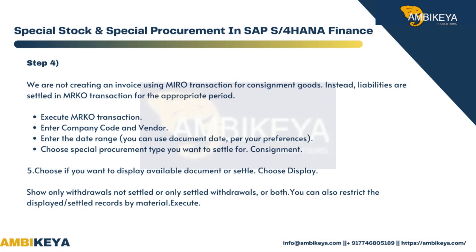Step 4: We are not creating an invoice using MIRO transaction for consignment goods. Instead, liabilities are settled in the MRKO transaction for the appropriate period. Execute MRKO transaction, enter company code and vendor, enter the date range per your preferences, and choose the special procurement type you want to settle — consignment. Choose whether you want to display available documents or settle, and show only withdrawals not settled, only settled withdrawals, or both. You can also restrict the displayed or settled records by material.